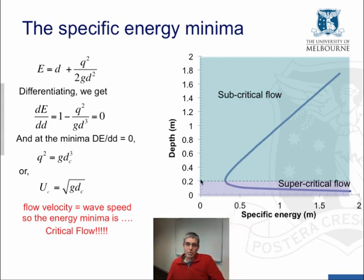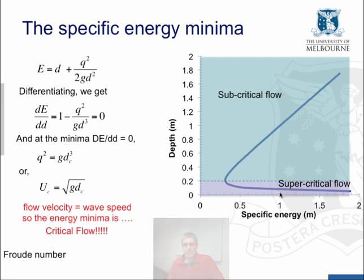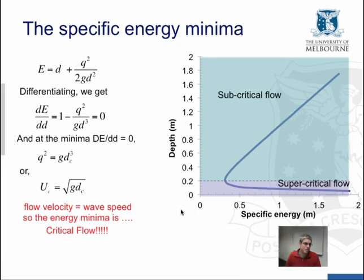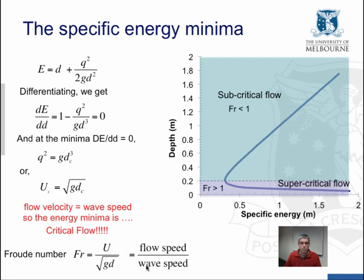So again, critical flow at around 0.2 meters. And at higher flow depths, we have subcritical flow. And at lower flow depths, we have supercritical flow. Next, I want to introduce the non-dimensional number called the Froude number. The Froude number is calculated as the ratio of the velocity U to the square root of gravity times depth. This is the wave speed. So this is the ratio of flow speed to wave speed. And at the critical flow condition, flow speed equals wave speed, so the Froude number is one. At this minima in the specific energy curve, at critical flow, Froude number equals one.